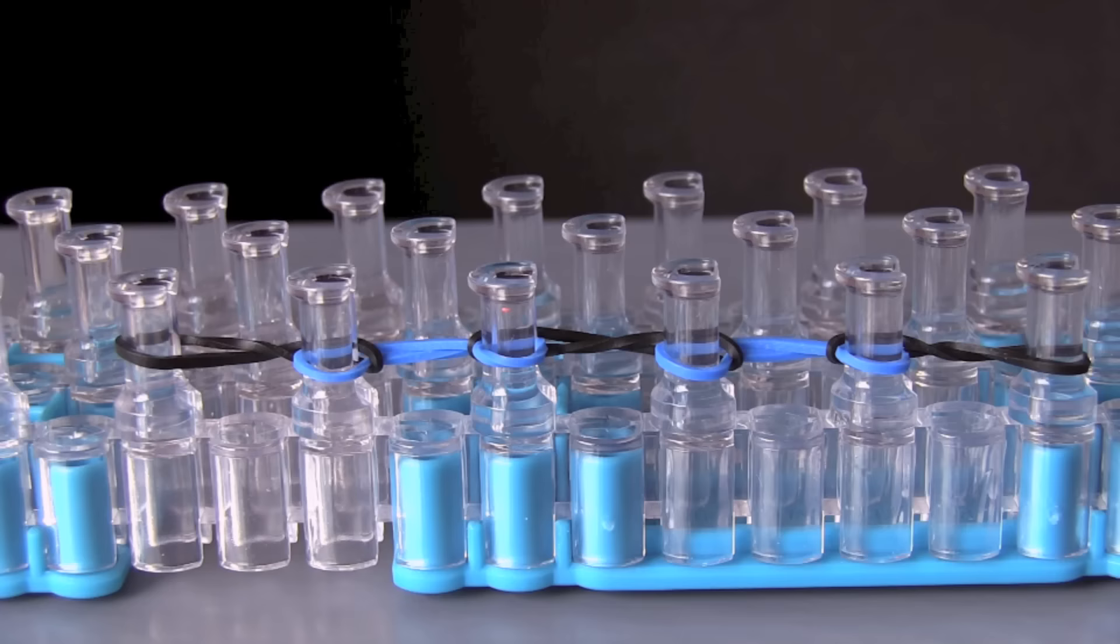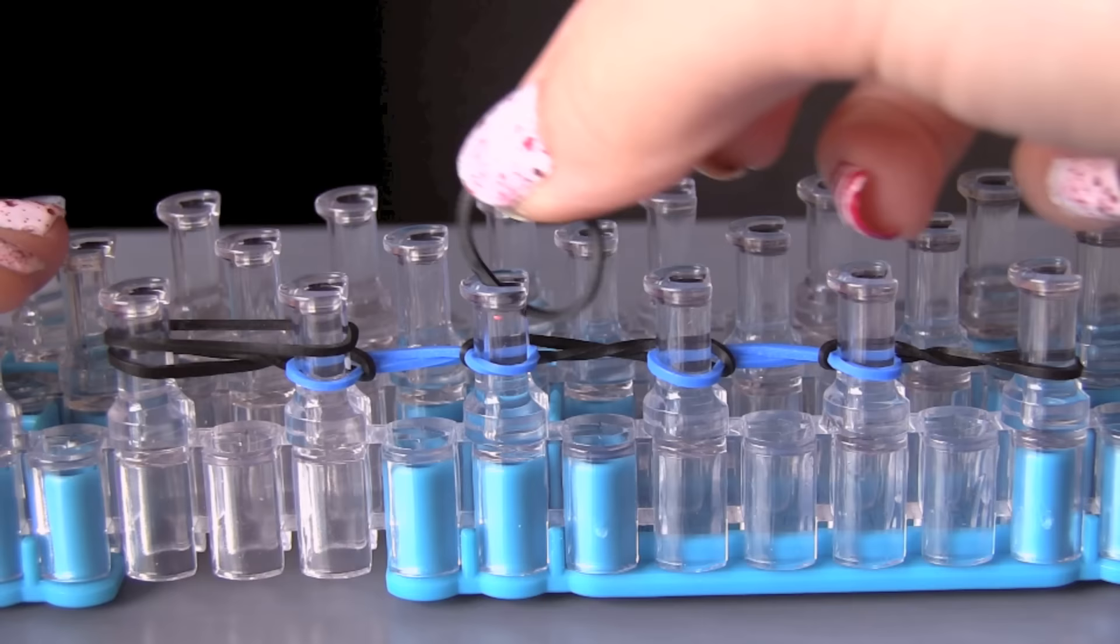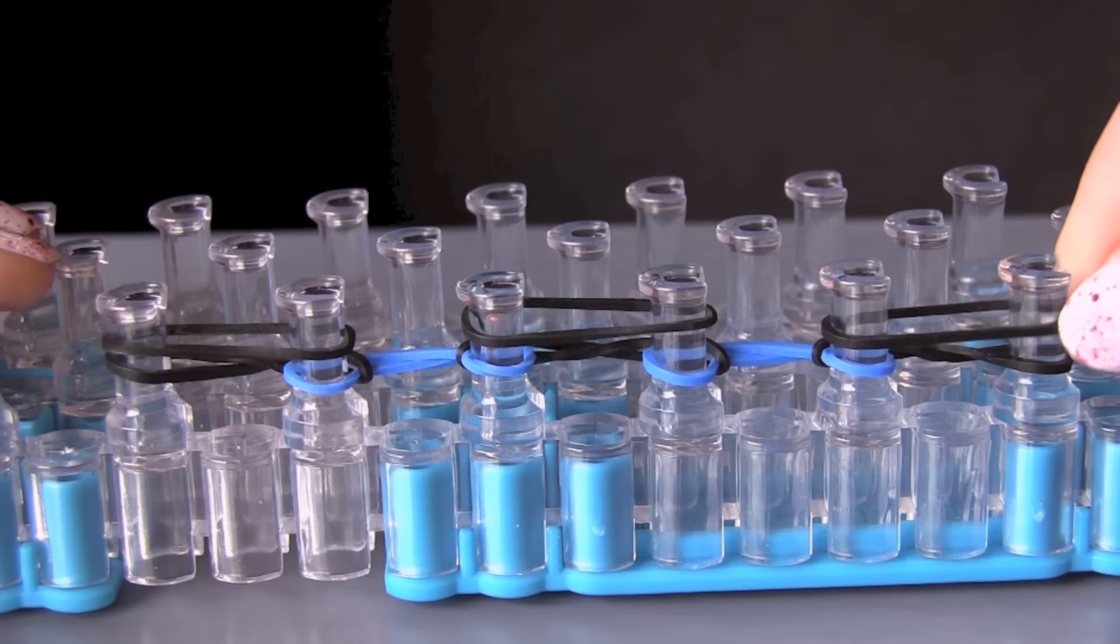I am going to grab 3 more black bands and we are actually going to put them on top of where we put the other black bands at the beginning. So this first band is going to just go on the 1st and 2nd peg. No more twisting just put them on normally. Then put the next one on the 3rd and 4th peg and then the 5th and 6th peg.